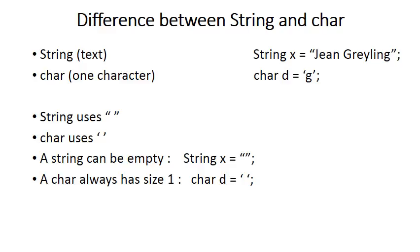Very important to note a string can be empty. So in this case string X is assigned to the empty string. Notice the two double quotes are next to each other. There's nothing between them. So we have an empty string. A char can never be empty. A char must always have a size one.